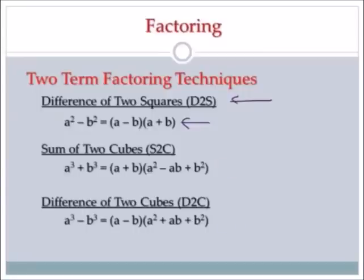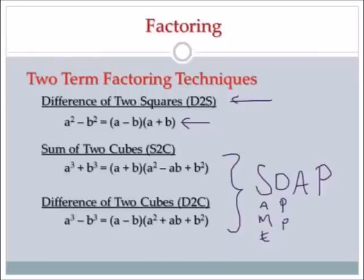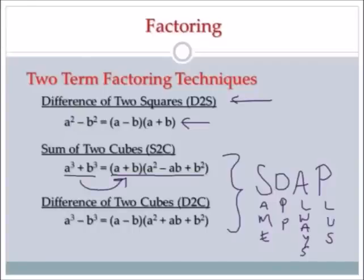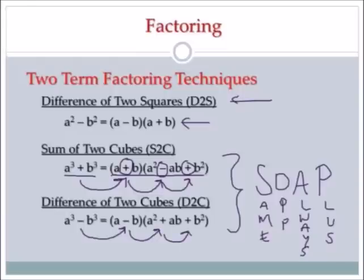For sum and difference of two cubes, here's how you're going to remember them — SOAP: Same, Opposite, Always Plus. This is what you're going to be given as the problem, and this is what you give as your answer. The first sign is always the same as the original. The next sign is opposite the first. And the last sign is always a plus. It fits for difference of two cubes as well: start with a minus, the first sign is the same, then opposite, then always a plus.